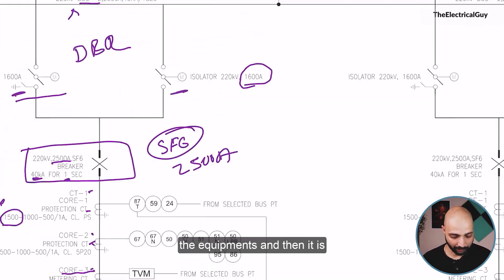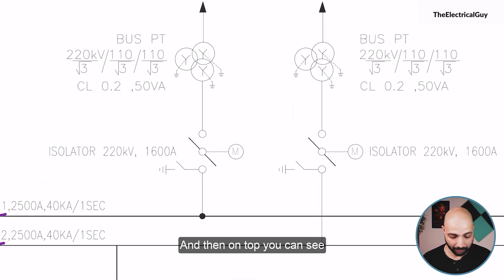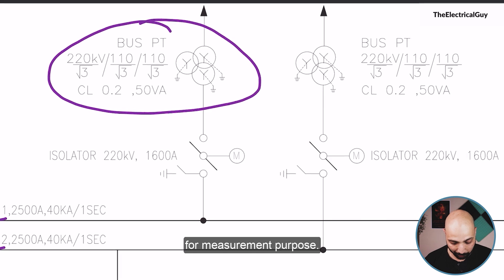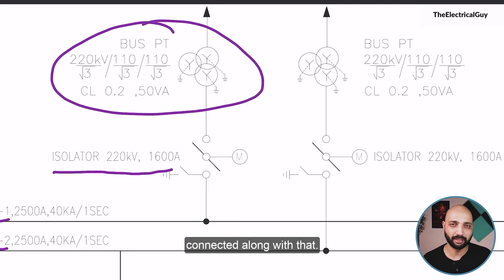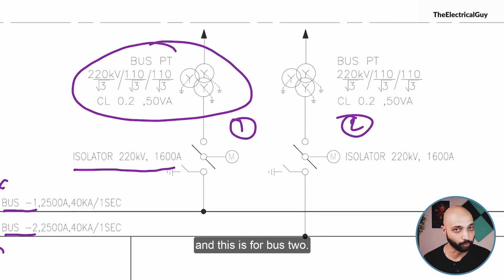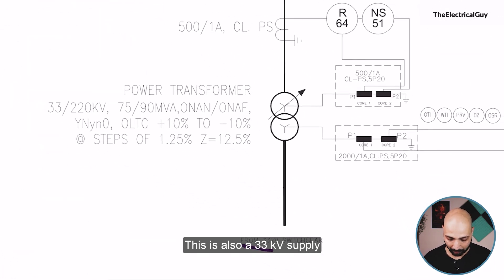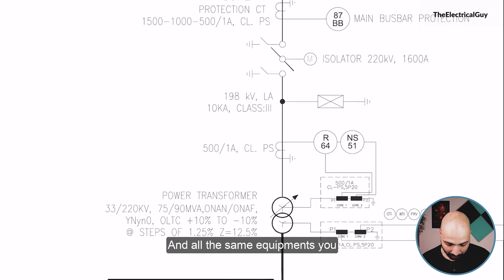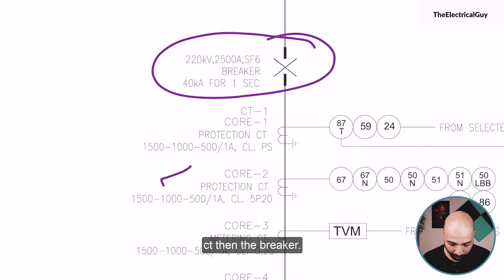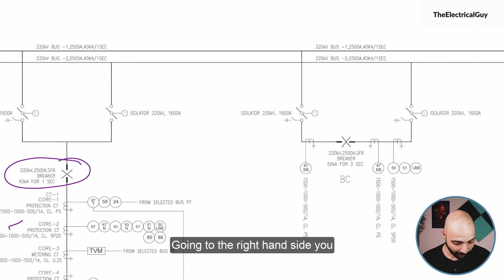So this is one bay — 33 kV supply is coming from a 33 kV switchyard, stepping up through all the equipment, then getting connected to the different bus bars. On top you can see a metering PT — a potential transformer used for measurement purpose — and an isolator is also connected along with that. There are two different bus PTs: one for Bus 1 and one for Bus 2. Going to the right-hand side, a similar bay is also used — another 33 kV supply from a 33 kV switchyard with all the same equipment: power transformer, CT, disconnector, another CT, then the breaker, connected via double break disconnectors.